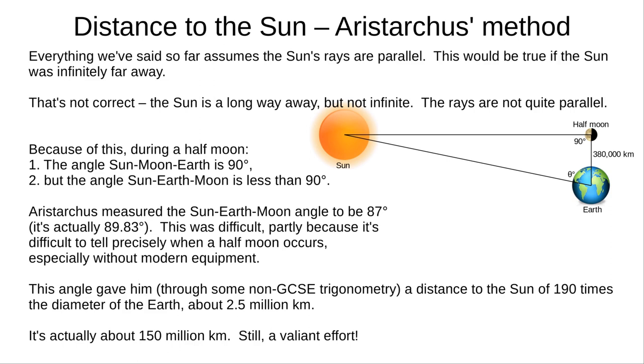Because of this, Aristarchus realized that when the moon is exactly half full, the Earth-Moon-Sun angle must be exactly 90 degrees. But the Moon-Earth-Sun angle must be less than 90 degrees. Because the Moon-Sun-Earth angle can't be zero.